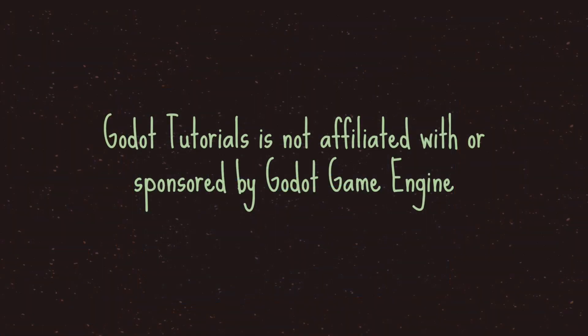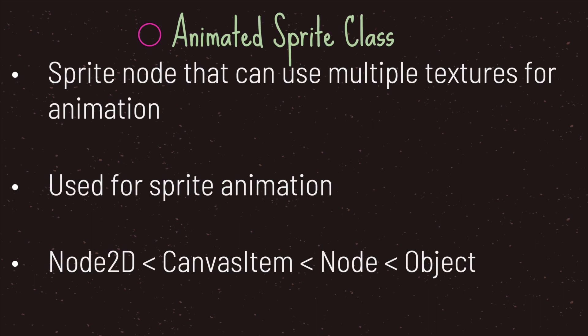Hello and welcome to another episode in the Godot Basics tutorial series. Godot Tutorials is not affiliated with or sponsored by Godot Game Engine. In this episode we will be taking a look at the AnimatedSprite class, which is a sprite node that can use multiple textures for animation — basically sprite animation.